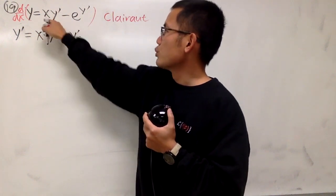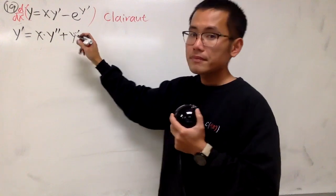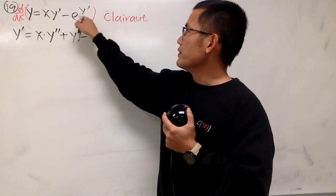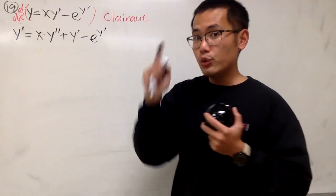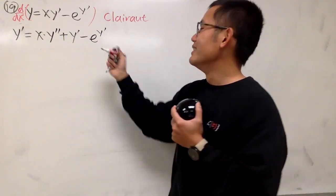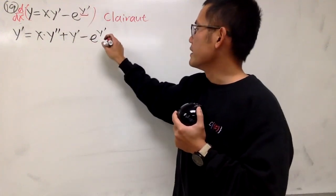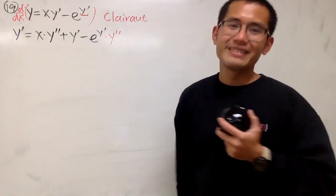times the derivative of the first, which is 1. Doesn't matter. Then, derivative of this is just e to the negative y prime, and use the chain rule. Right? Chain rule says multiply by the derivative of this, which is y double prime, like that.